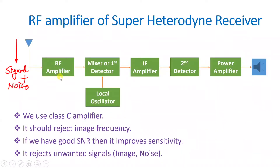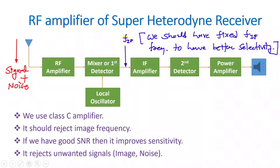The RF amplifier should have a good SNR, which improves sensitivity. A low noise amplifier with good SNR that rejects unwanted signals — including image signal and noise — is the correct selection for the RF amplifier. One more key point: IF frequency should be fixed at 455 kHz in the super heterodyne receiver, which makes performance way better than the TRF receiver.